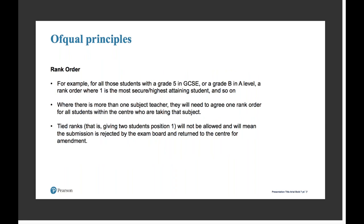You will also need to provide a rank order for candidates within each grade. For example, if you have four candidates achieving a B grade, then one would be the highest attaining or most secure candidate, two would be the next, and so on. If you have more than one teacher or cohort, you will need to agree one rank order for all students within the centre taking the subject. You won't be allowed to have tied rank orders — for example, you can't have two candidates both given position one within a grade. The submission would be returned to the centre to be amended, and this can cause delays in the process.